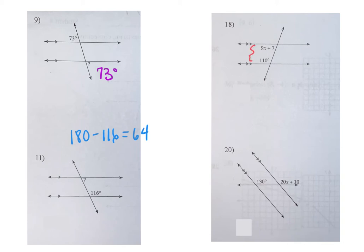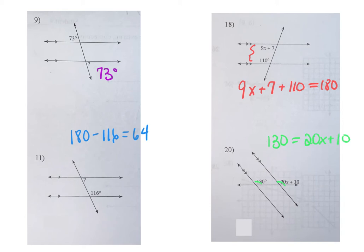If you look at the next set of questions on page three, they're identical to page two except you're solving for X. Same side: take these two and set them equal to 180, then solve for X. And for corresponding angles, those are congruent, so set them equal to each other. If you know from the first page whether they're congruent or supplementary, you can handle pages two and three.